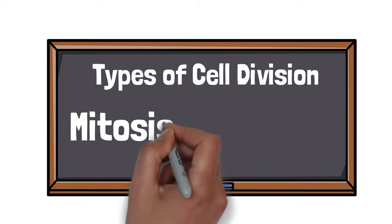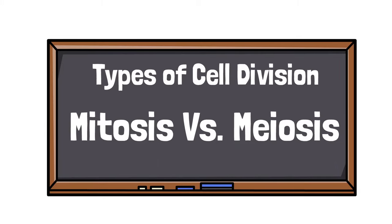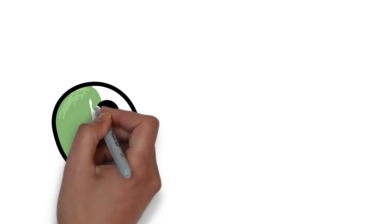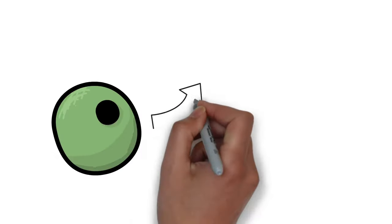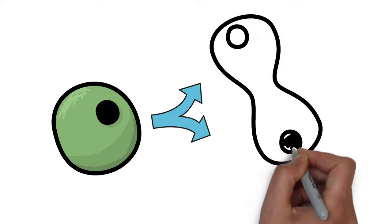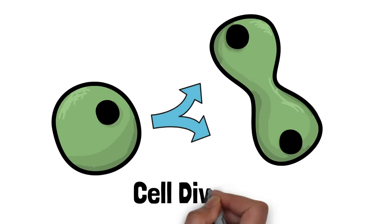Let's talk about types of cell divisions. According to the third point of cell theory, new cells originate from pre-existing cells. The process by which this occurs is called cell division.